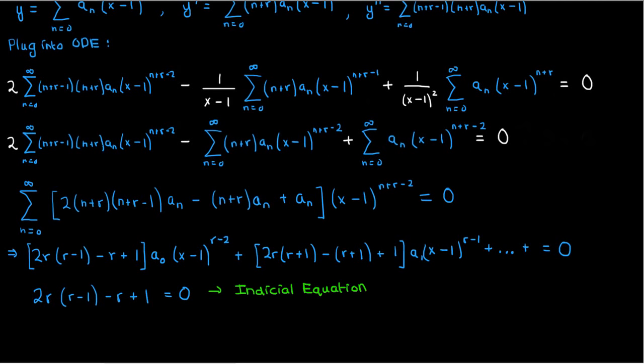Let's solve this equation. If we expand out the first term and simplify, we'll get 2r² - 3r + 1 = 0, and after applying the quadratic formula, we'll find that the roots are r = 1 and r = 0.5.